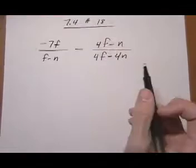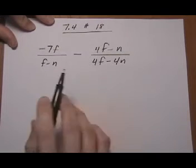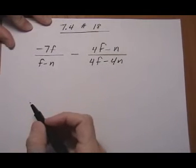7.4 number 18. Here we're subtracting two rational expressions and we have to have common denominators, but right now we don't have common denominators.